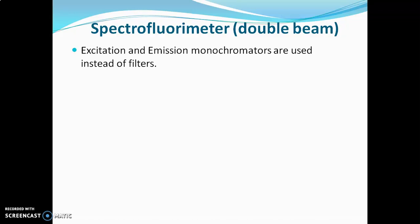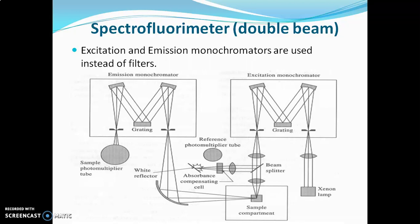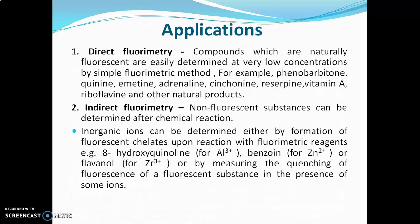The spectrofluorometer is a double beam instrument. The difference from the double beam fluorometer is that the spectrofluorometer uses excitation and emission monochromators instead of filters. It is the most advanced, sophisticated, and accurate instrument.